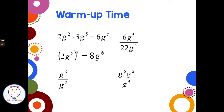Then we have g to the sixth divided by g squared. If we're dividing and have the same base, we subtract the exponents — 6 minus 2 — to get g to the fourth. Then we have 6g to the fifth divided by 22g to the fourth. The coefficients 6 and 22 both reduce by 2 to give 3 elevenths. The g's subtract — 5 minus 4 — leaving one extra g on top, so the answer is 3g over 11.